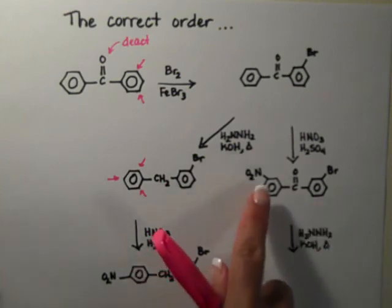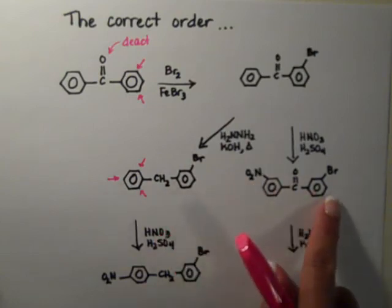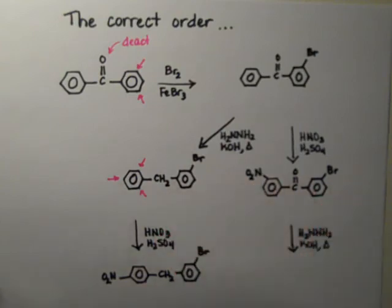So we have a nitro on the meta position on the left ring and a bromine on the meta position on the right ring, and now we do the Wolf-Kishner reaction and again we're going to just reduce the carbonyl all the way down to the methylene.